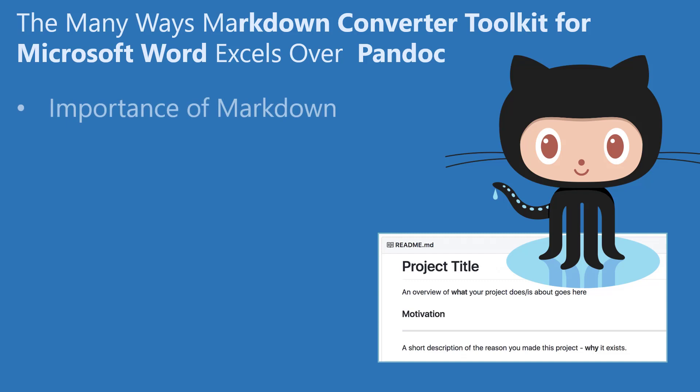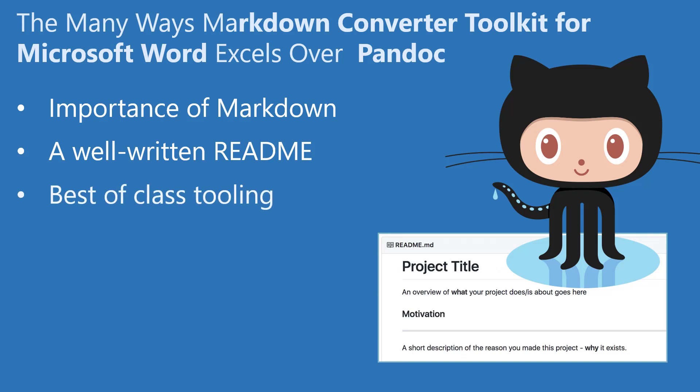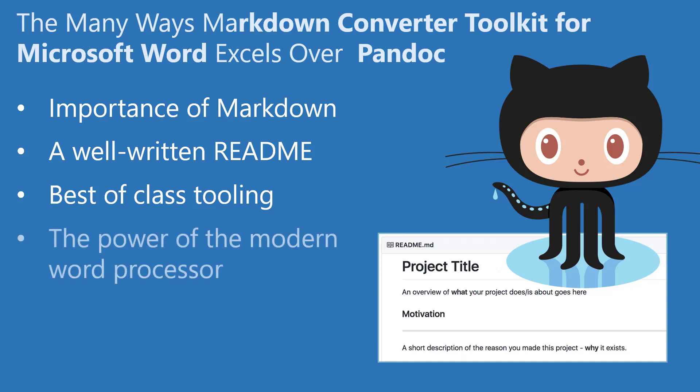But before we do that, let's agree on the power of a word processor to create Markdown content. Writing great Markdown is important for the success of your project. A great readme helps your project stand out from the vast sea of open source projects on GitHub. That's why it's important to choose the best possible tooling to create your Markdown. Without question, the best way to create Markdown is to use a proper, full-featured, and powerful word processor — something like Microsoft Word.